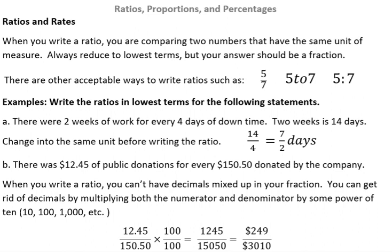There are other acceptable ways to write ratios. What I'm looking for in our class is the fraction notation read as 5 to 7, but you could actually write 5 to 7, and sometimes people use the colon 5 to 7. Those are all ways to write ratios, and then you always want to reduce to lowest terms and make sure that you're using the same unit.